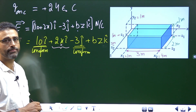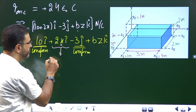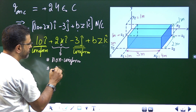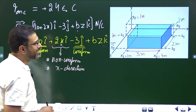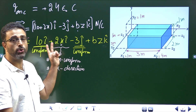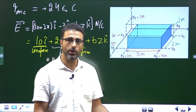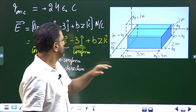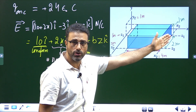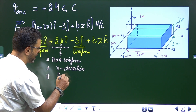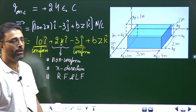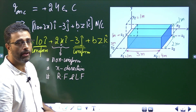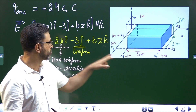The 2x·î component is non-uniform and is in the x-direction. It will contribute to flux through the faces perpendicular to the x-axis — that is, the right face and the left face, which lie in or parallel to the YZ plane. For the right face, X = X₂ = 4 meters; for the left face, X = X₁ = 1 meter. So we know the field at both positions.